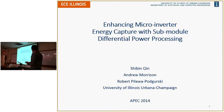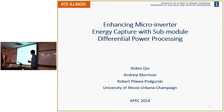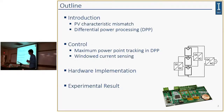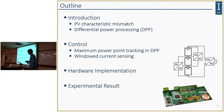Our second speaker today is Shibin Jing. Shibin received his bachelor's degree in electrical engineering from Hwa Zhong University of Science and Technology in 2012, and he's currently a master's student at the University of Illinois with Professor Palawa. His research interest is in power electronics and photovoltaic applications. Today he's going to talk about the work done on merging differential power processing with a microinverter — the first dynamic demonstration of DPP control working together with a microinverter. He'll introduce what DPP is, how it works, how to control it, implementation challenges and solutions, and experimental results.